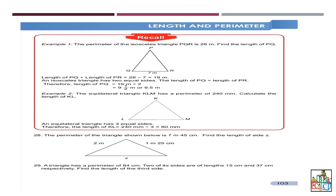I know you are familiar with this topic as you did this in grade 5 as well. Let us continue with example 2. The equilateral triangle KLM has a perimeter of 240 millimeters. Calculate the length of KL. For an equilateral triangle, all three sides are the same. If the perimeter is 240, you divide by 3, and each side is 80 millimeters.